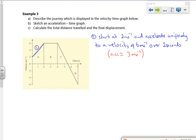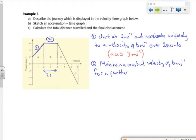Then the next part of the journey, I have a constant velocity of 6 meters per second for 2 seconds. So maintain a constant velocity of 6 meters per second for a further 2 seconds. There we go.